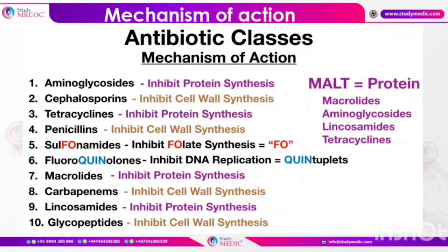Starting from aminoglycosides — antibiotics like streptomycin and gentamicin — which are contraindicated in pregnancy especially from the second trimester onwards, because they have adverse effects on the renal system of the fetus causing renal dysgenesis, oligohydramnios, and subsequently causing a sequence like pulmonary hypoplasia. The mechanism of action of aminoglycosides is inhibition of protein synthesis by binding with the 30S ribosomal subunit.